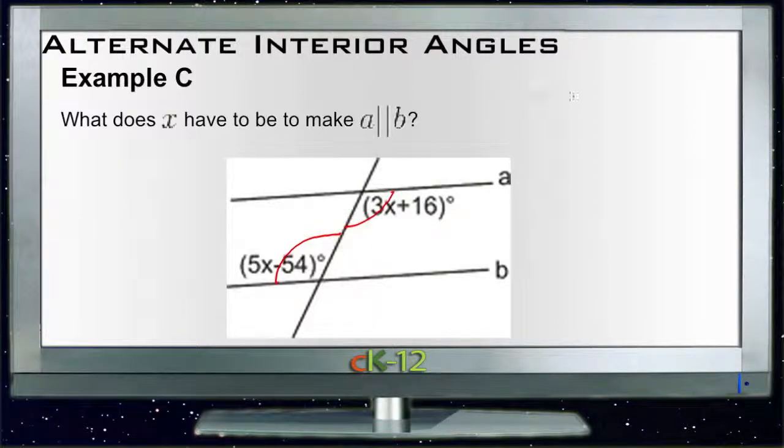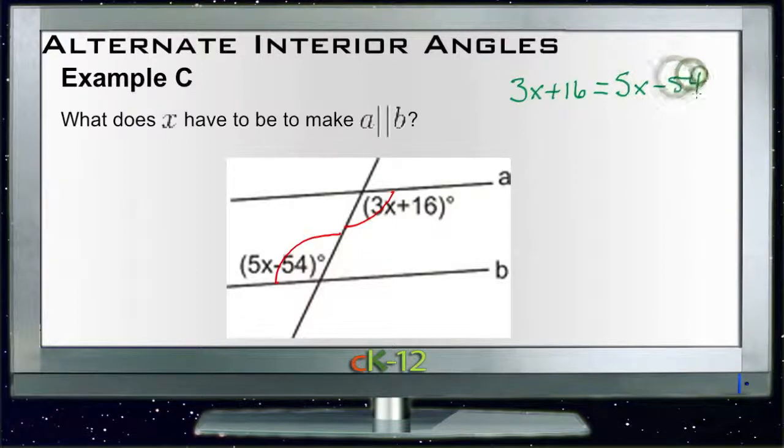So that tells us that 3x plus 16 is equal to 5x minus 54. Now, if those two things are equal, then our alternate interior angles are equal, which would mean that a is parallel to b.